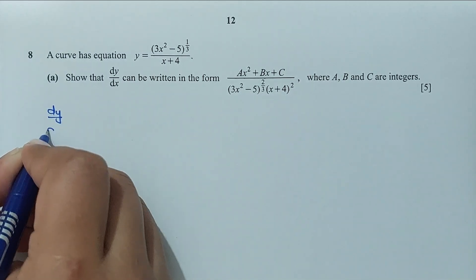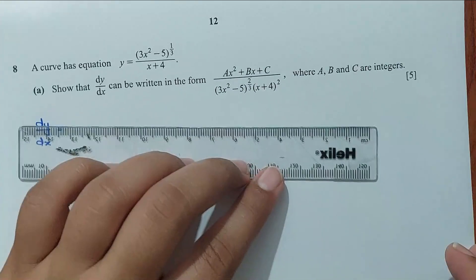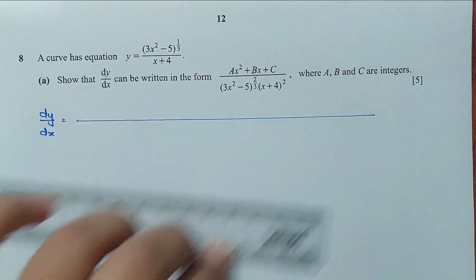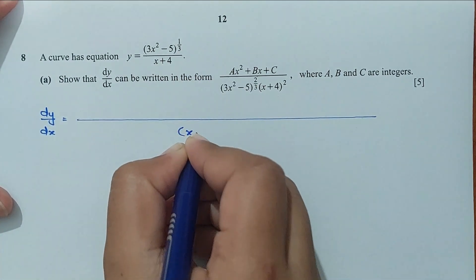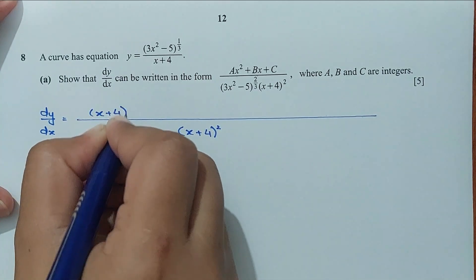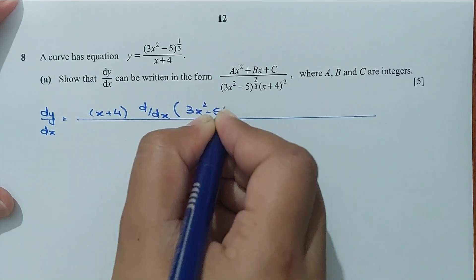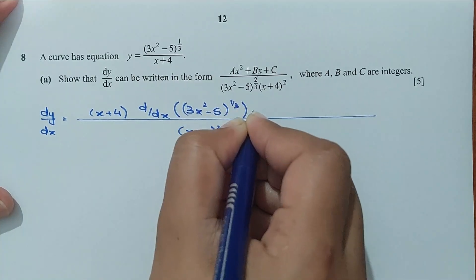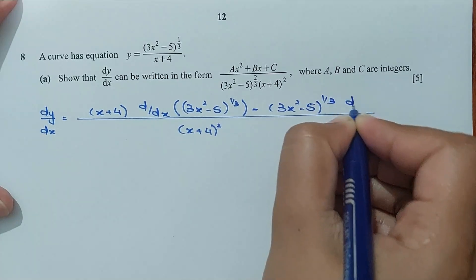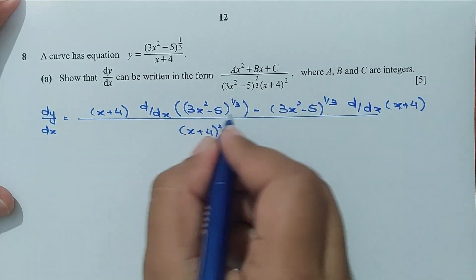So dy/dx, applying the quotient rule here. For the quotient rule, the denominator function squared is (x + 4) whole square, times the denominator function and the derivative of the numerator function, which is (3x² − 5) to the power 1/3, its derivative, minus the numerator function and the derivative of the denominator function, d/dx of (x + 4). The derivative of (x + 4) is just 1, and here we apply the power rule.